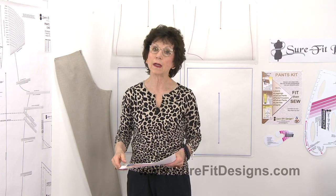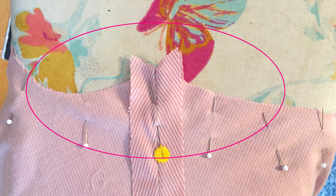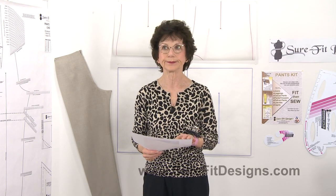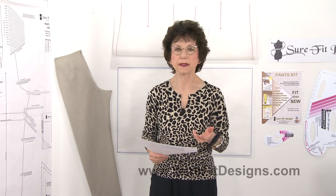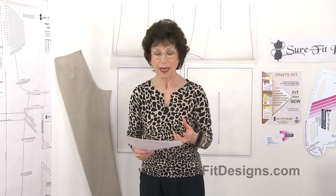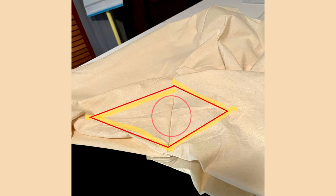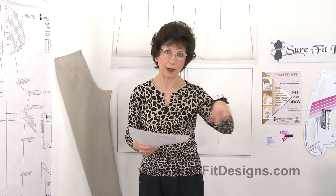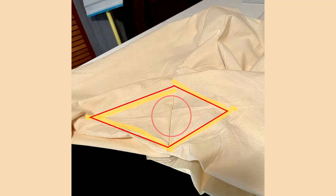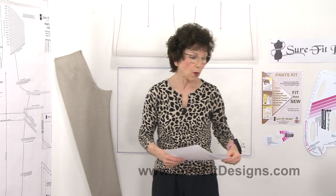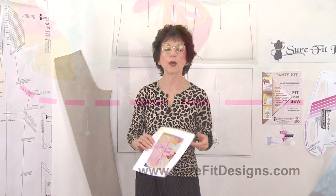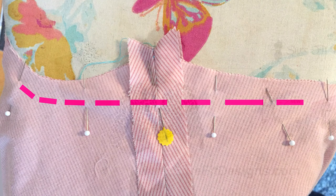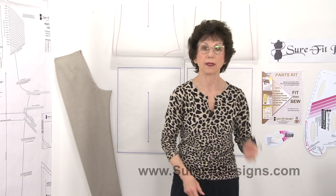If you follow the cut lines as shown in that photograph, you're going to create a bulky bunch of fabric right between your legs. In the next photograph I'm showing a diamond shape — an example of where she did follow the blip upward and back on the other side of the crotch. It couldn't be pressed nicely and it caused bulk at the crotch curvature. What you really want to do is sew straight across, as shown in this photograph.